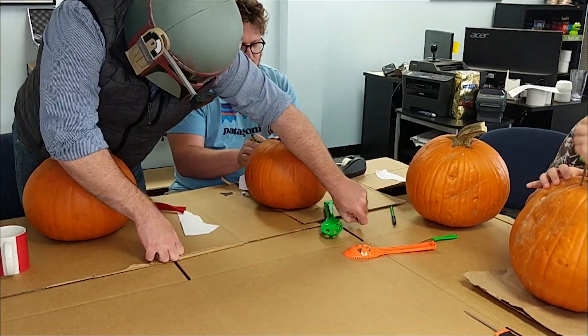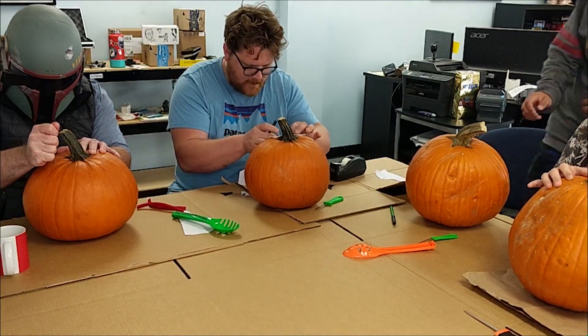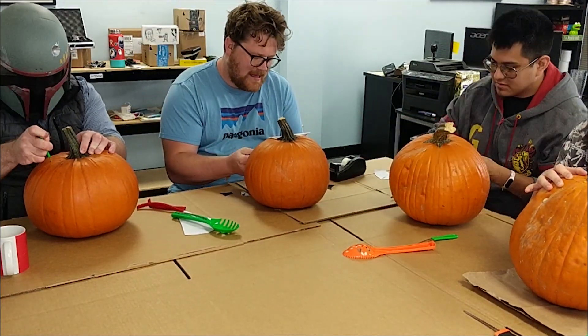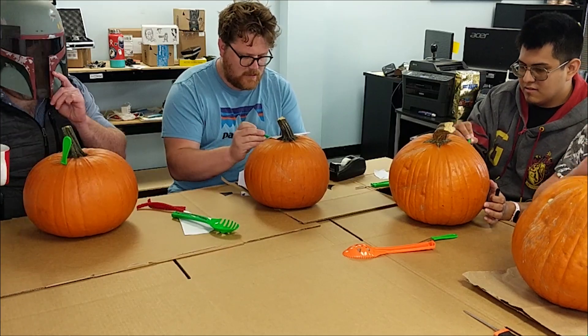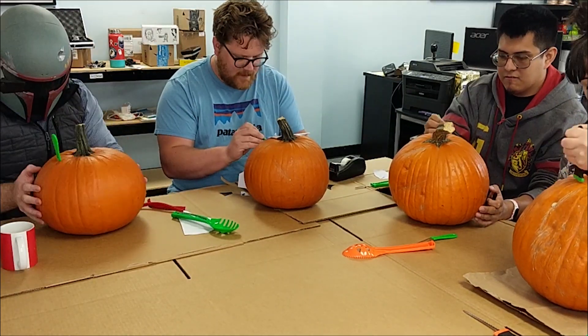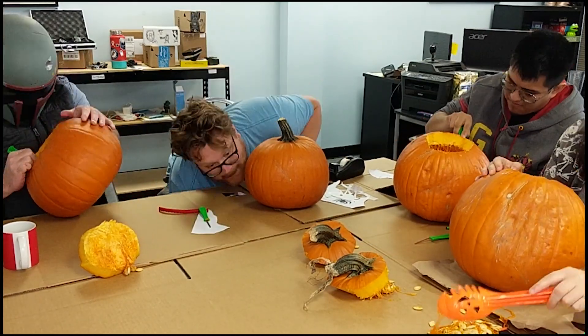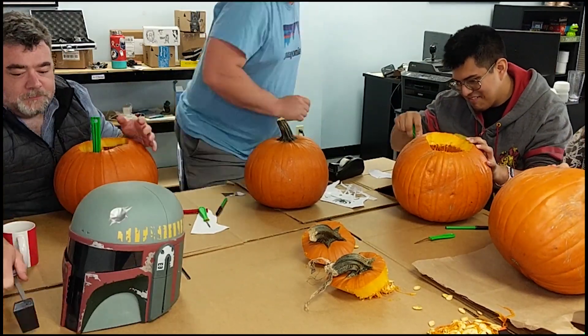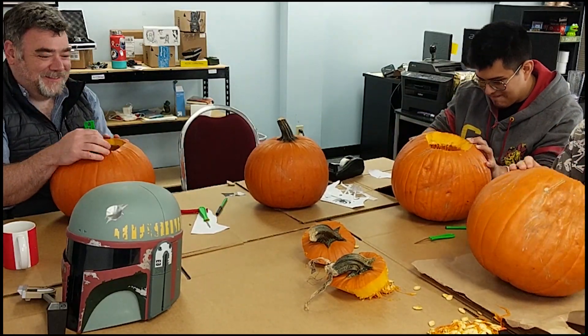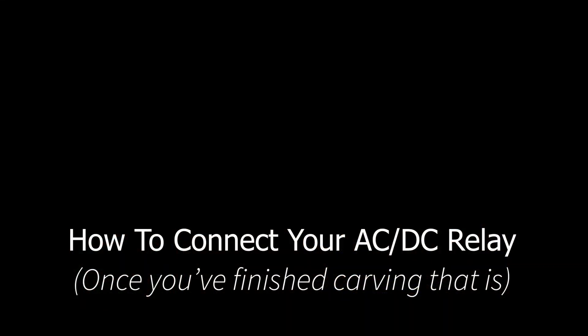To properly send notifications from your GuardLine receiver to your jack-o-lantern, you're going to need a few things. You're going to need obviously your jack-o-lantern, your GuardLine sensor and receiver, an AC-DC control relay system, a small screwdriver, and some Christmas lights. You're also going to want to make sure everything's properly powered.